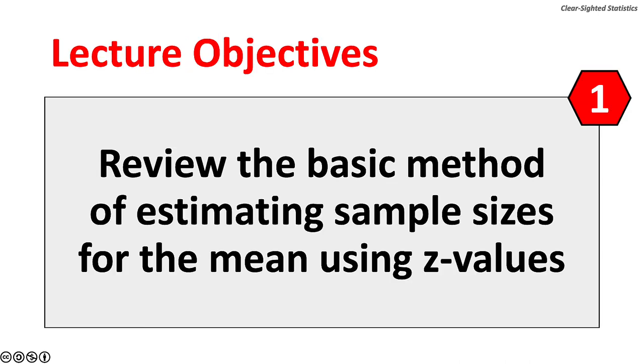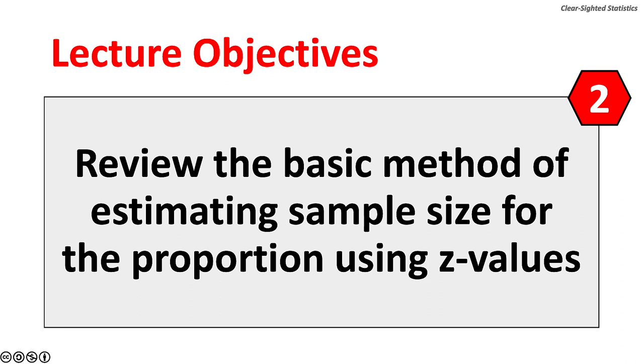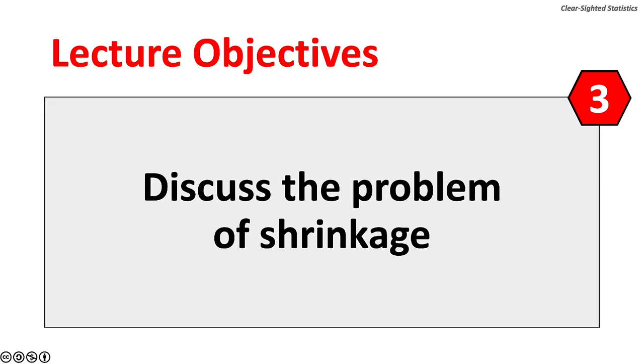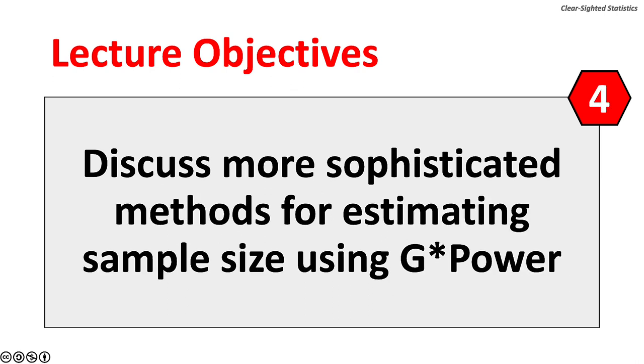This lecture has four objectives. One, we will review the basic method for estimating sample size for the mean using z-values. Two, we will review the basic method for estimating sample size for the proportion using z-values. Three, the problem of shrinkage will be discussed. We will briefly discuss more sophisticated methods for estimating sample size using g-power.